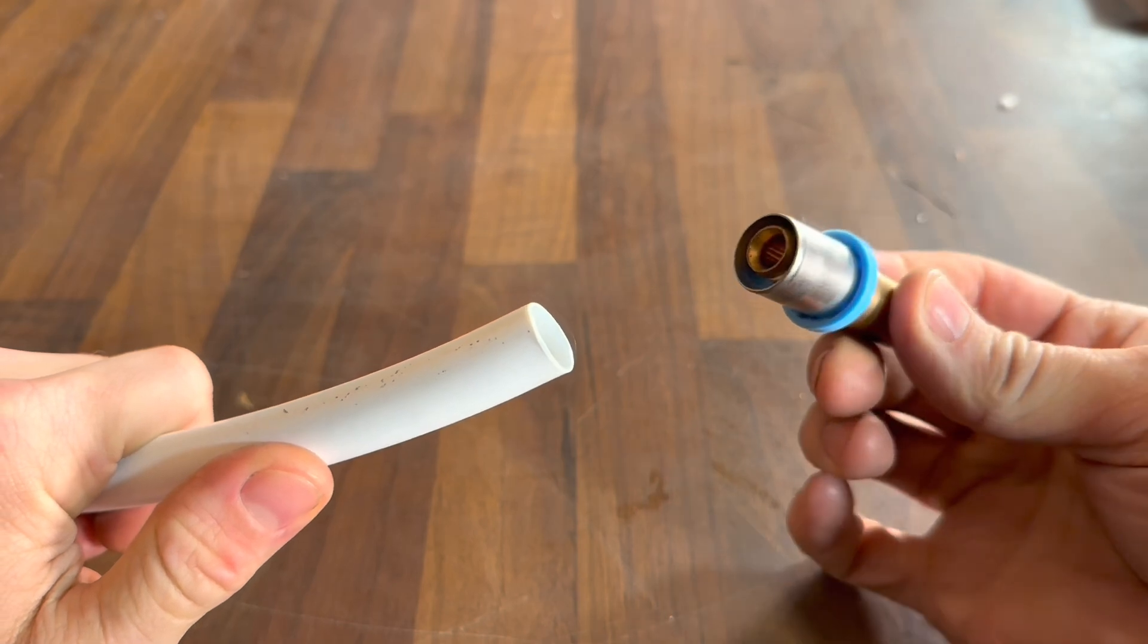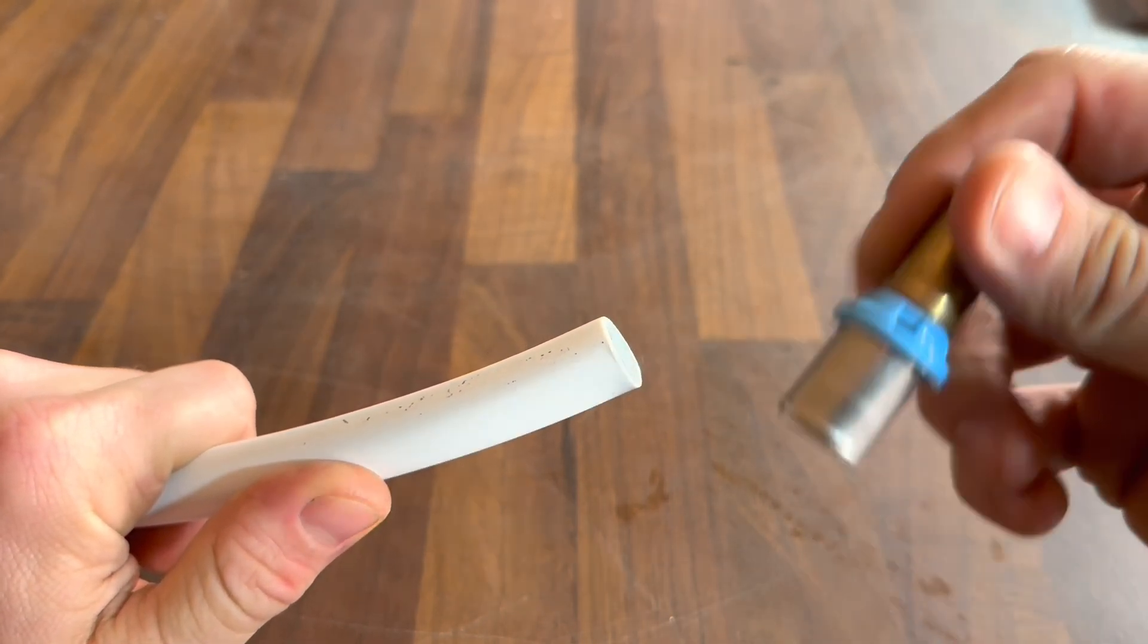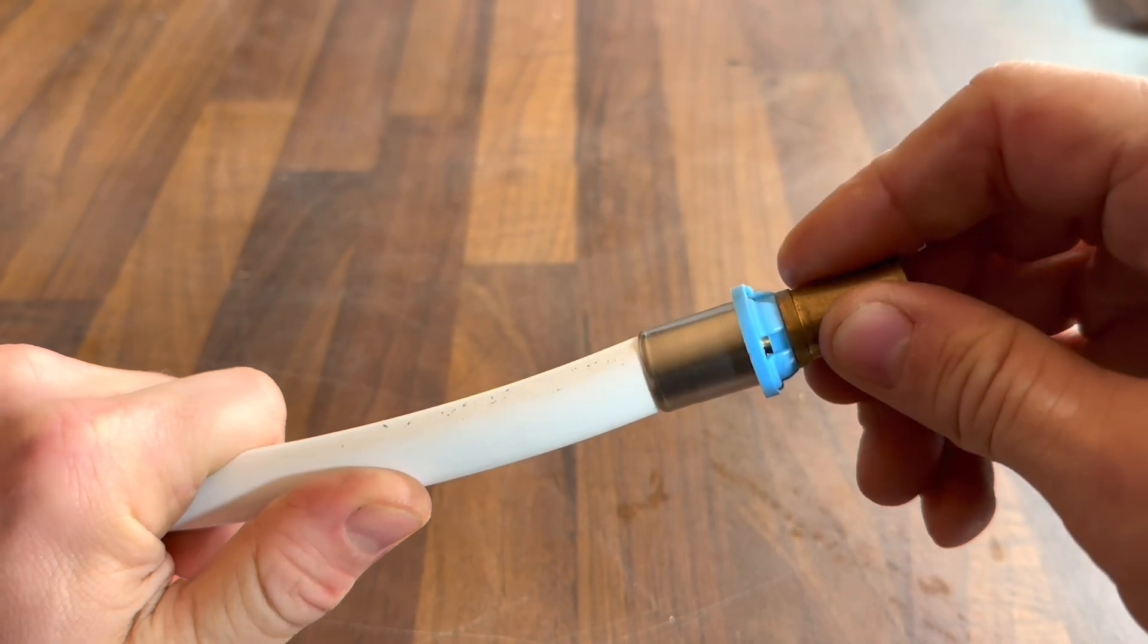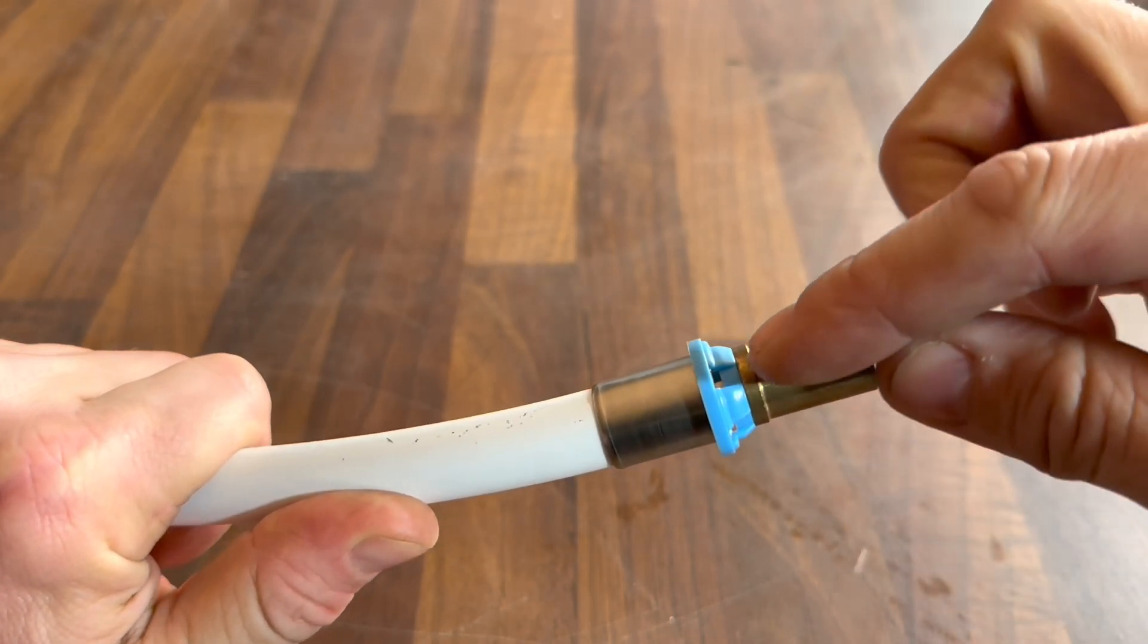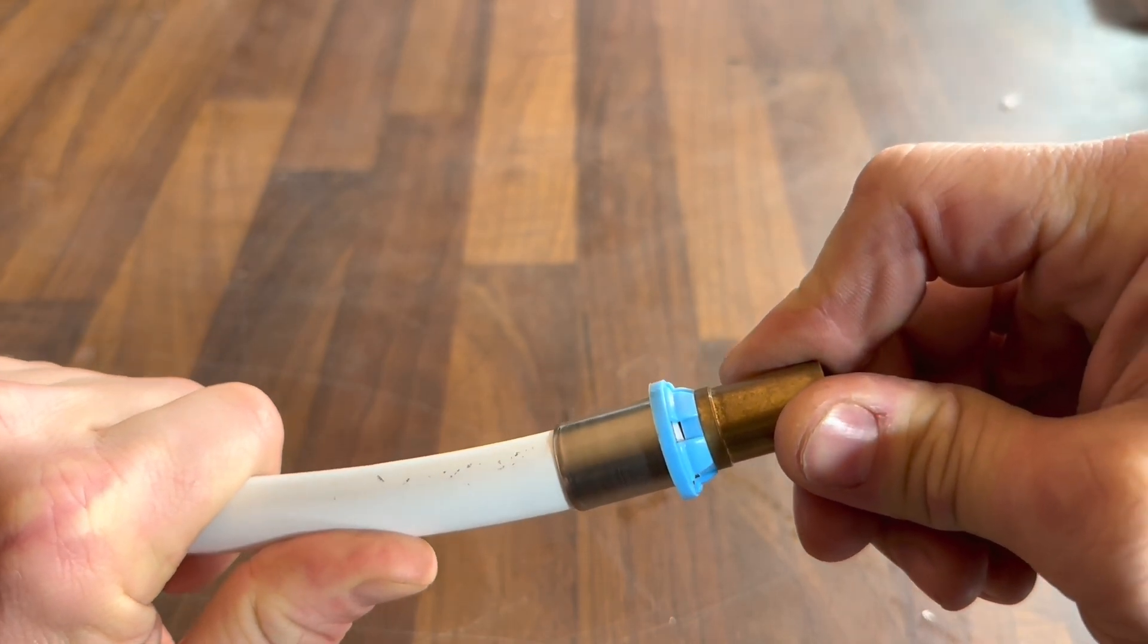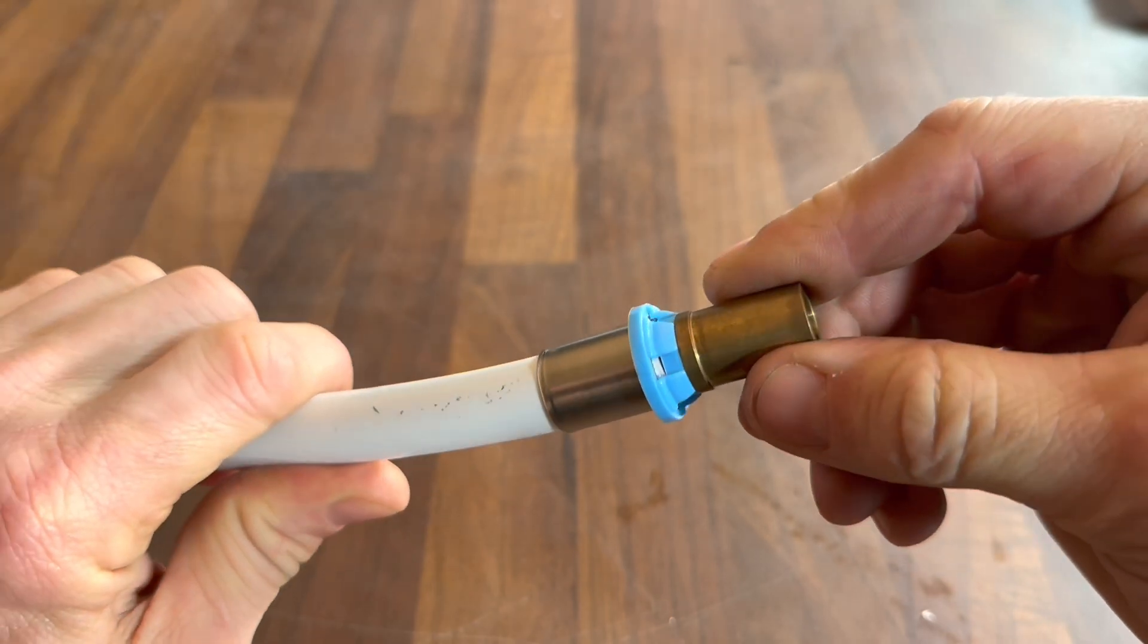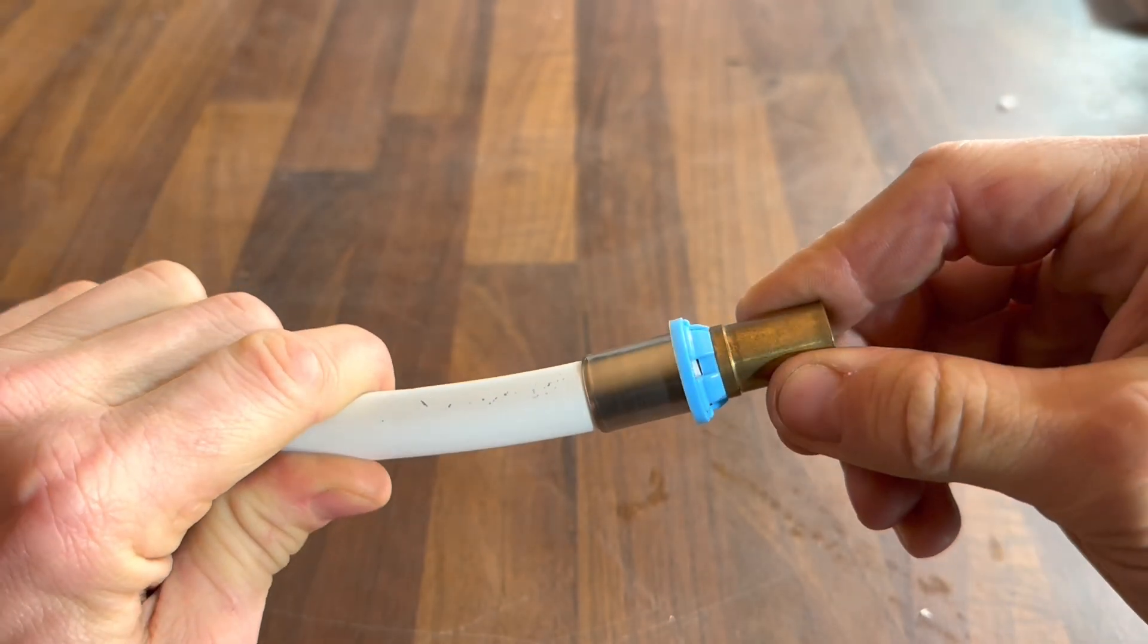So when we come to put the fitting onto the pipe, obviously we've prepared the end of this pipe, we've opened it up and reamed it. When we push this on you'll see here we've got a little viewing window. When the fitting is onto the pipe as far as it needs to be you'll see the pipe through that viewing window. If you can't see the pipe in the window you've not pushed it on far enough.